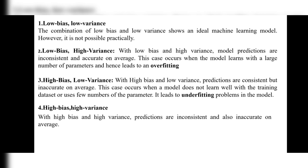With high bias and low variance, predictions are consistent but inaccurate on average. It doesn't show accurate values. This case occurs when a model does not learn well with the training data sets or uses few number of parameters. It leads to underfitting problems in the model. Low bias and high variance leads to overfitting, whereas high bias and low variance leads to underfitting.